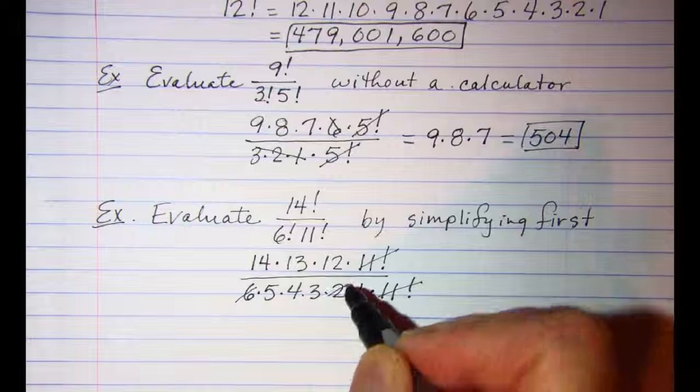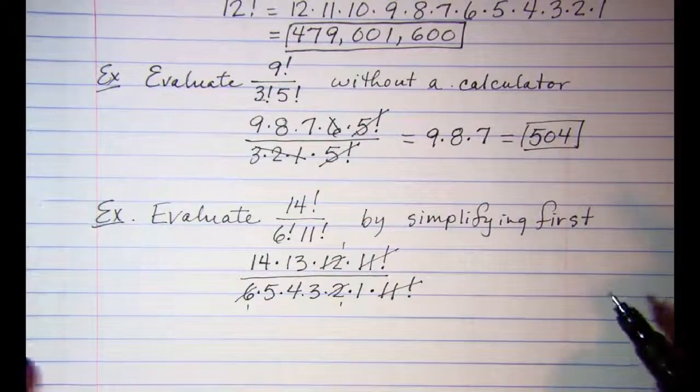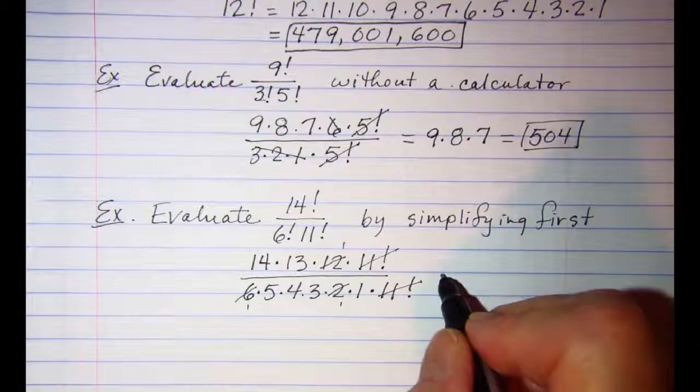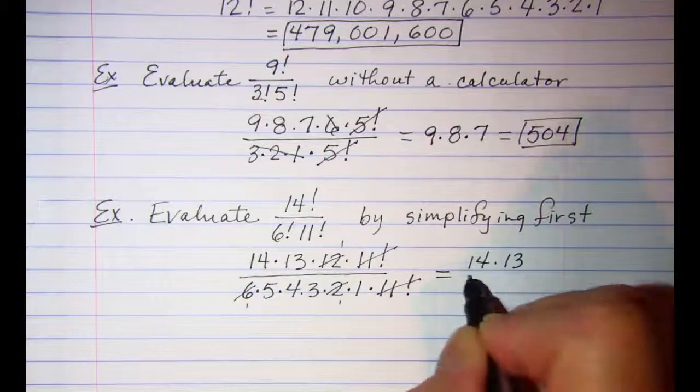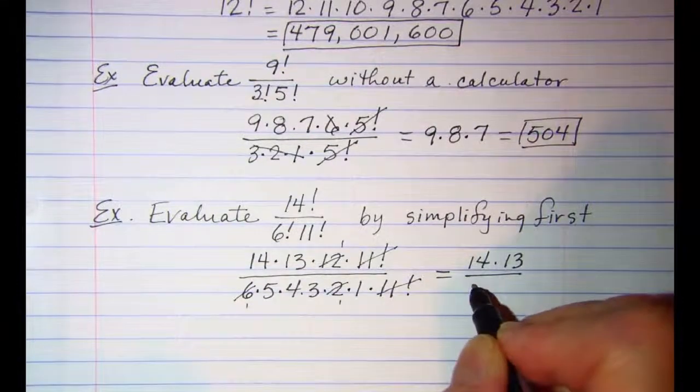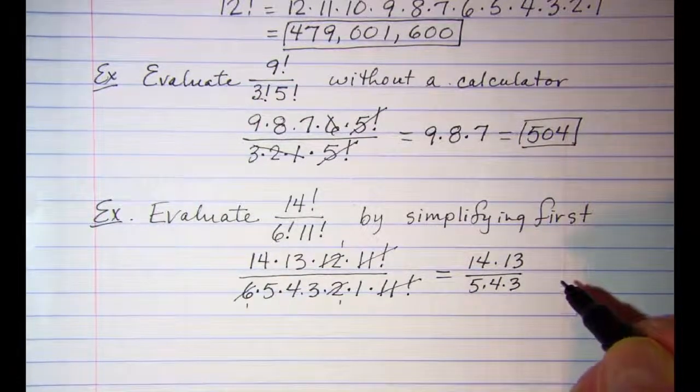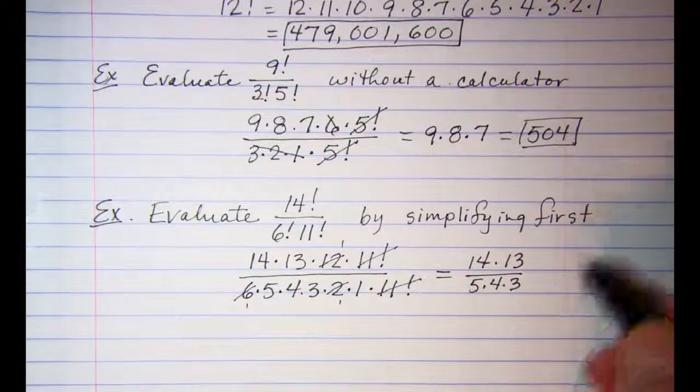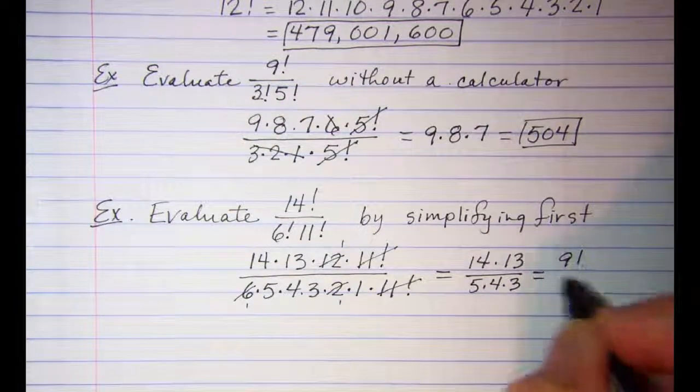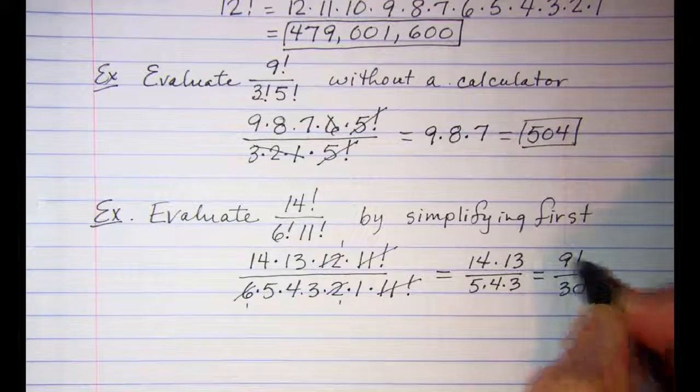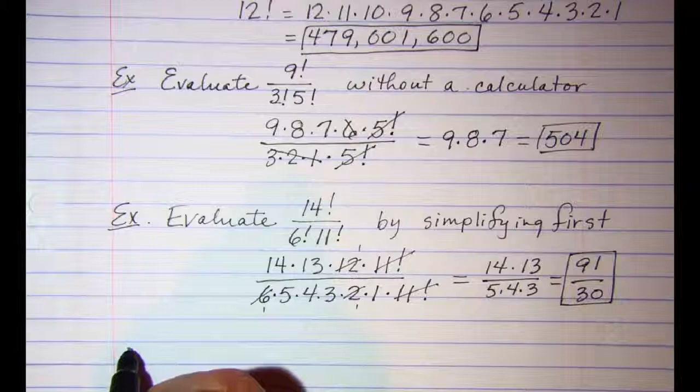11! ÷ 11! is 1, so those cancel. I can also simplify 6 × 2 is 12. So I have 14 × 13 ÷ (5 × 4 × 3), and this answer is 91/30. Let's try one more example.